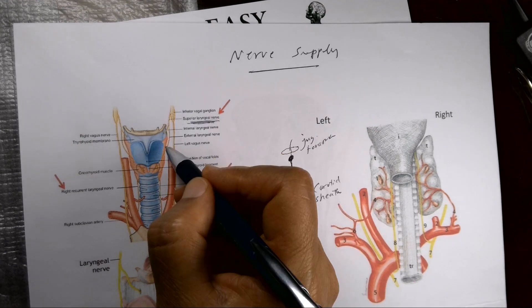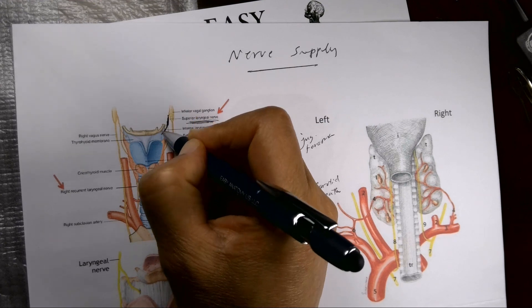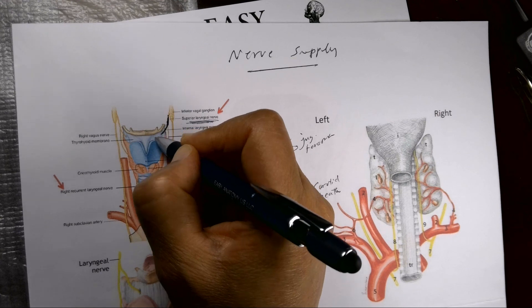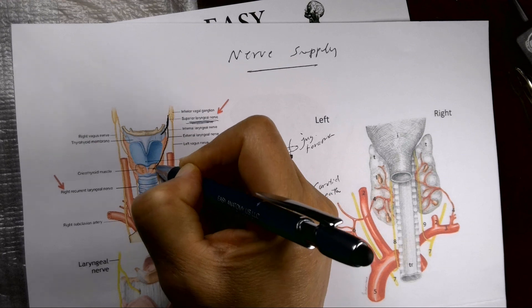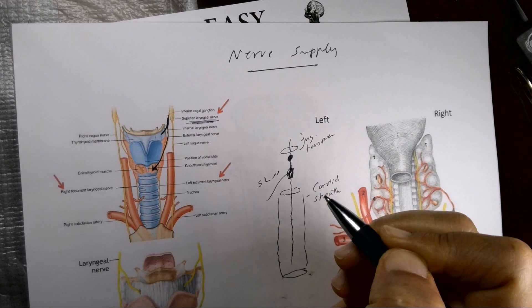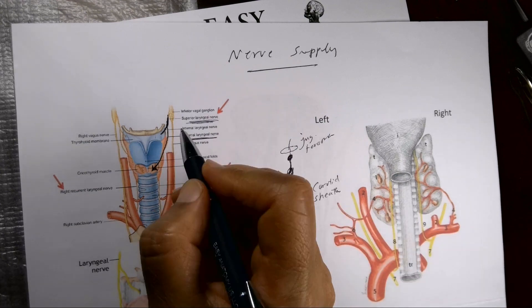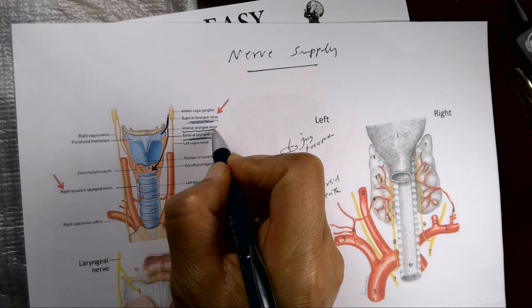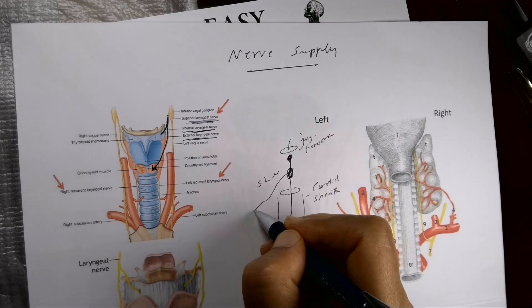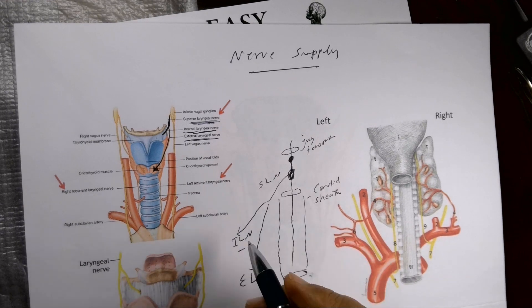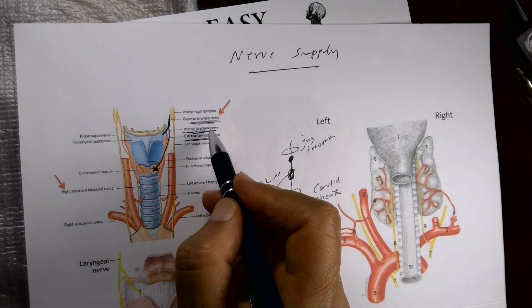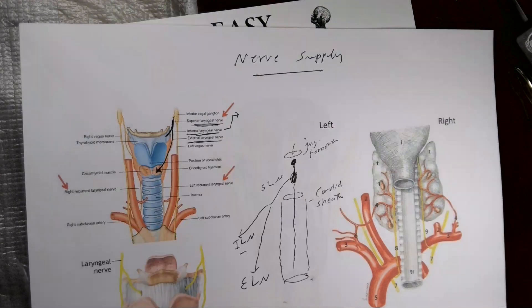The superior laryngeal nerve splits into two branches: the internal laryngeal nerve, which is sensory and penetrates the thyrohyoid membrane, and the external laryngeal nerve, which descends over the inferior constrictor to reach the cricothyroid muscle.